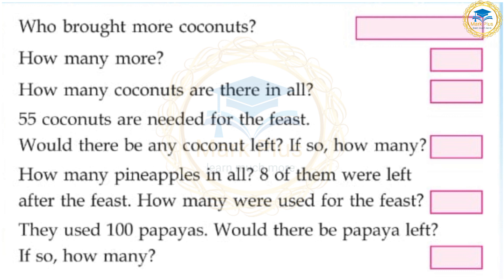Who brought more coconuts? Elephant. How many more? Five more. How many coconuts in all? 35 plus 30 is 65 coconuts. 55 coconuts are needed for the feast. Would there be any coconuts left? Pineapples in all? 18 plus 27 is 45 pineapples.